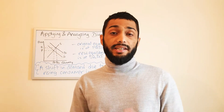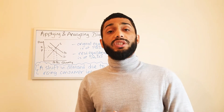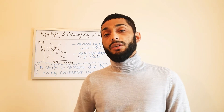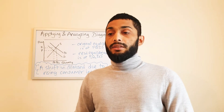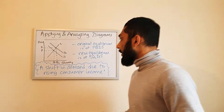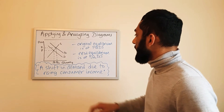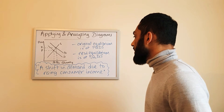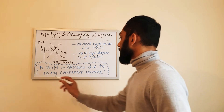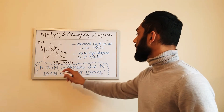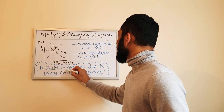An awesome way to explain and analyze points in an essay could be to apply a relevant diagram in the answer and then analyze it according to the question. Let's have a look at a certain scenario and a diagram. I've got a diagram drawn up there and the scenario playing out at the bottom. The scenario says there will be a shift in demand due to rising consumer income — so there will be a rise in consumer income and as a result there's a shift in demand.